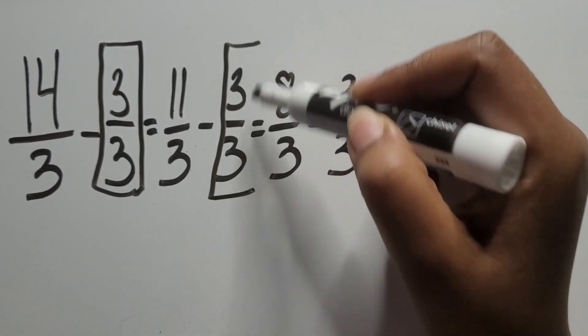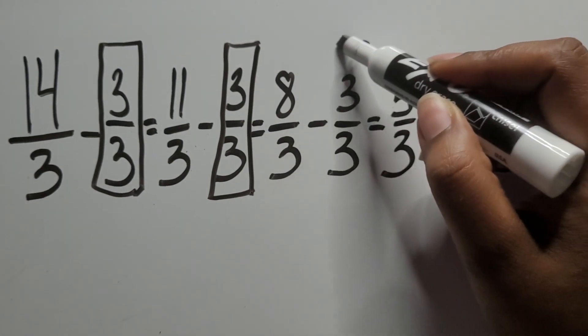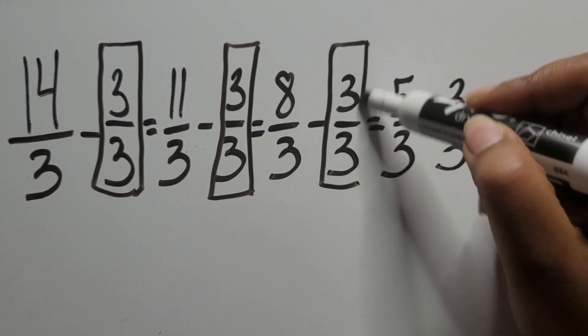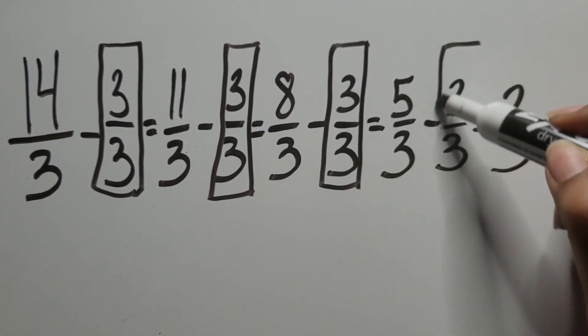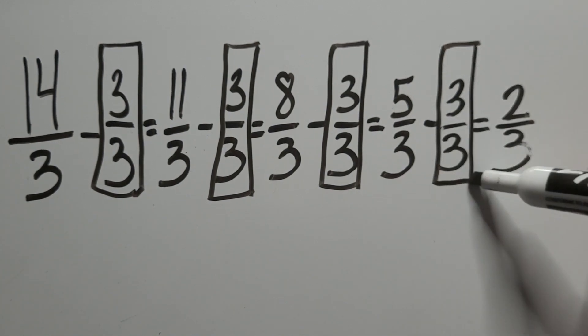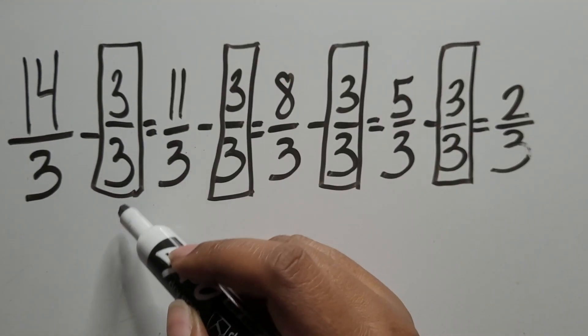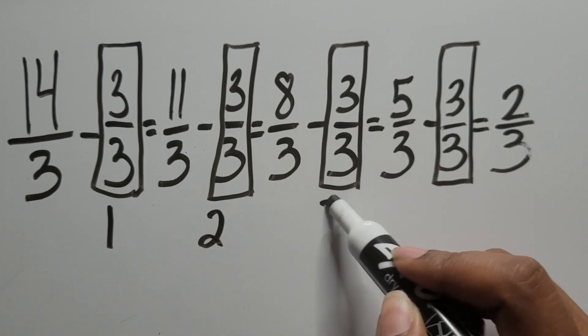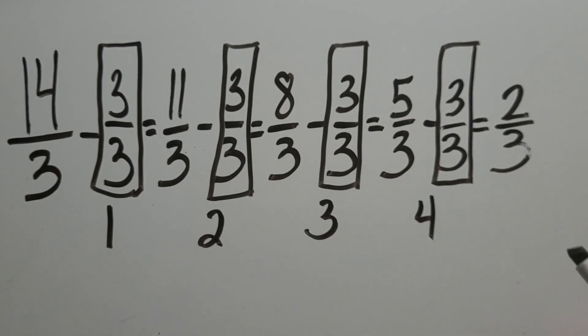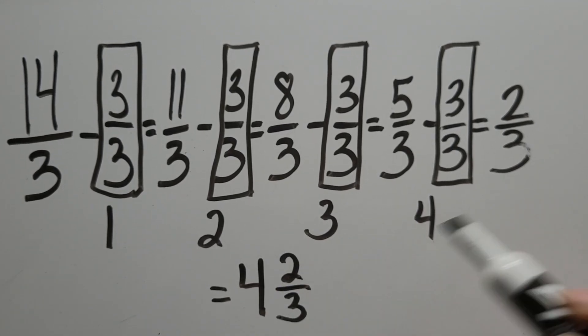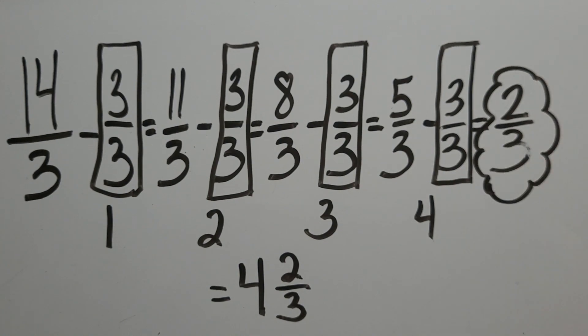To count how many wholes are in 14 thirds, let's group each three thirds that we subtracted and see how many there are in total. One, two, three, four. There are four wholes in 14 thirds and two extra thirds. Don't forget those extra thirds. 14 thirds is equal to four and two thirds.